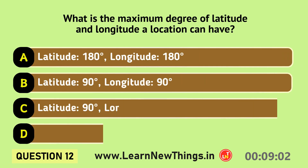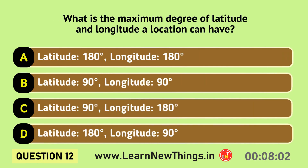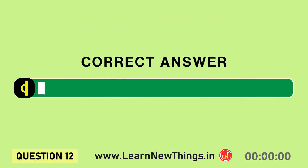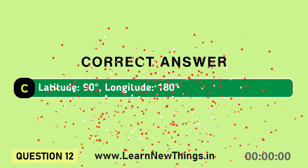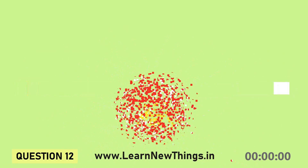What is the maximum degree of latitude and longitude a location can have? Latitude 90 degrees, longitude 180 degrees.